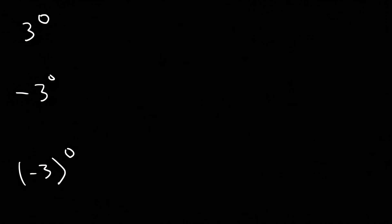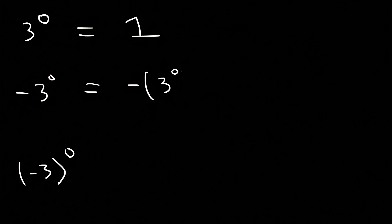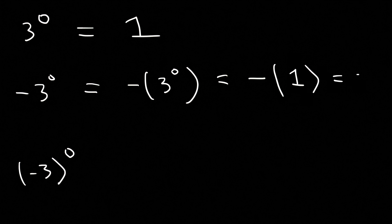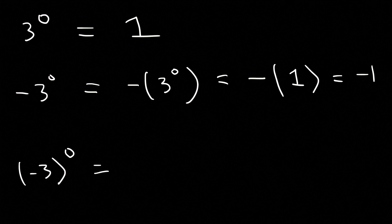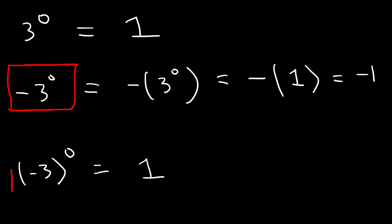Sometimes you may have to deal with a zero exponent. Anything raised to the zero power is 1, so 3 to the zero is 1. What about negative 3 to the zero (without parentheses)? The zero only affects the 3, not the negative sign, so this is negative times 1, which is negative 1. In the last example, negative 3 inside parentheses raised to the zero — the negative sign is affected by the zero because it's within the parentheses, so the whole thing is 1. Make sure you know the difference between these two problems.